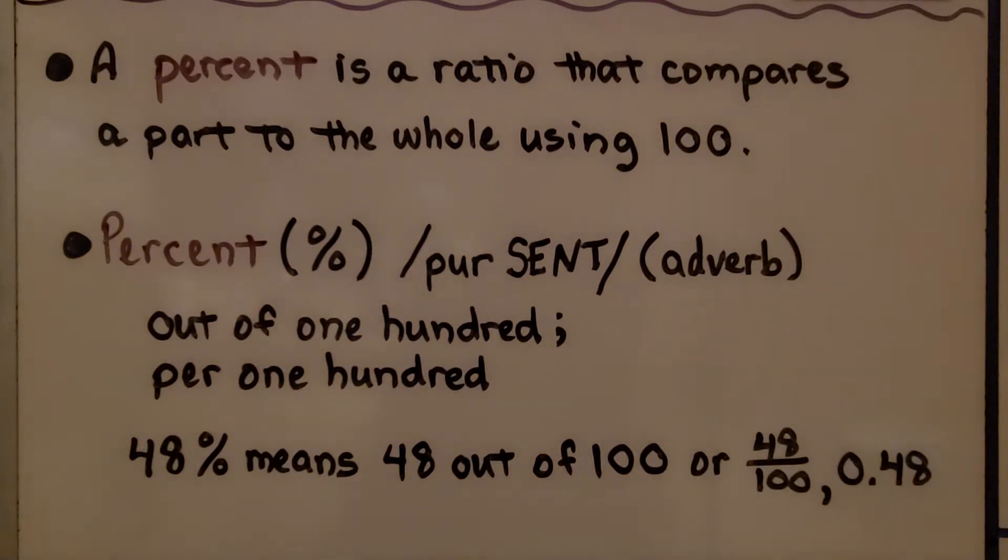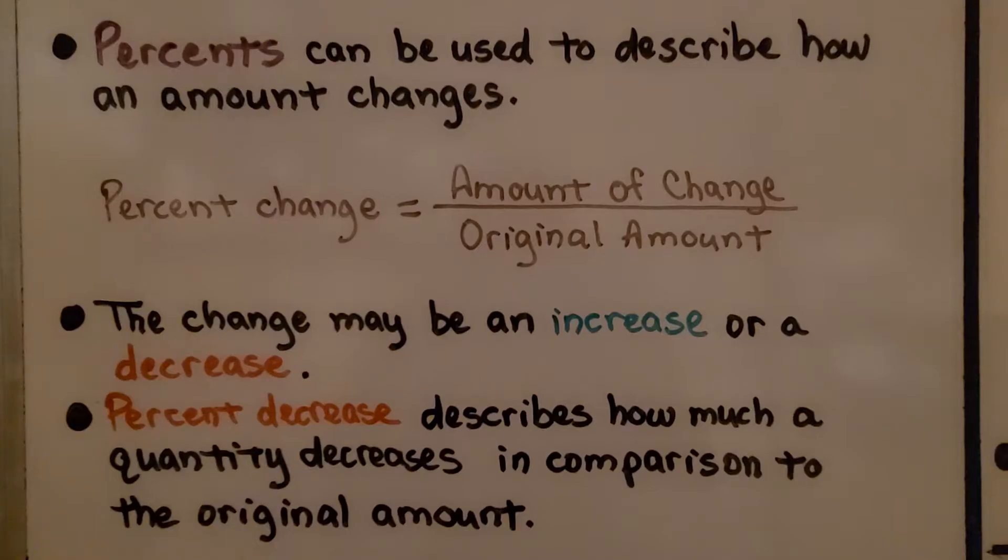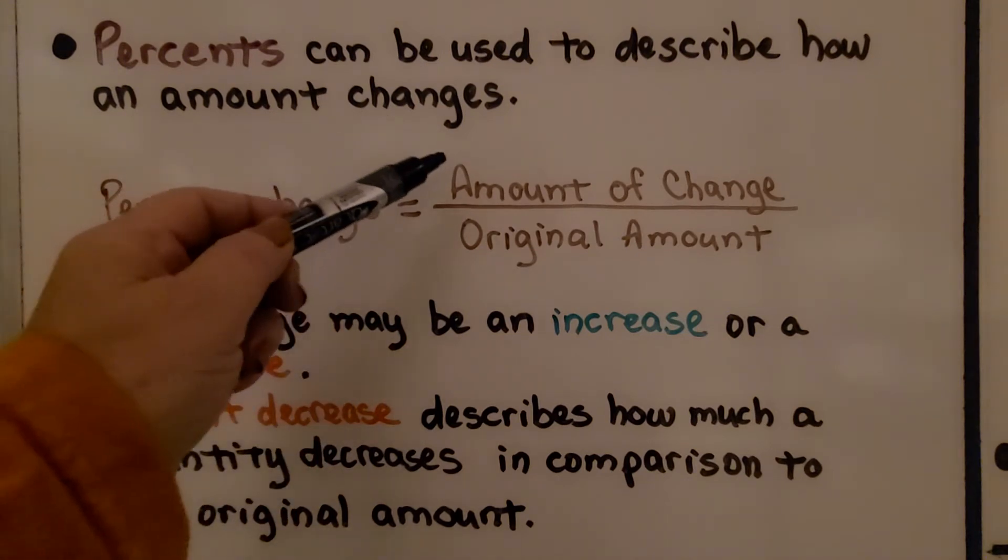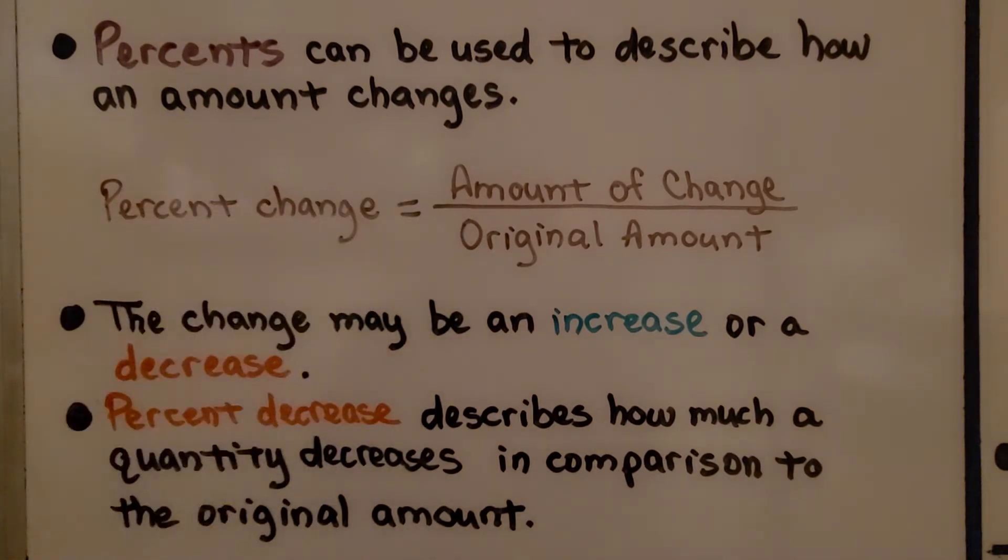48% means 48 out of 100 or 48 hundredths, and it can be written as a decimal as 0.48. Percents can be used to describe how an amount changes. The percent change is equal to the amount of change divided by the original amount.